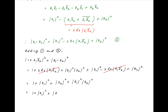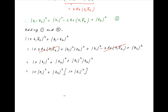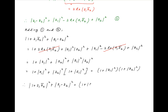This factors as 1 plus the square of the absolute value of z2, multiplied by 1 plus the square of the absolute value of z1. Therefore, to summarize, the square of the absolute value of 1 plus z1 times the conjugate of z2, plus the square of the absolute value of z1 minus z2, equals 1 plus the square of the absolute value of z1 multiplied by 1 plus the square of the absolute value of z2. This is the required result.